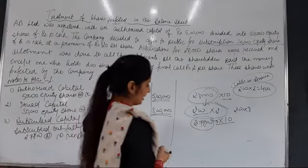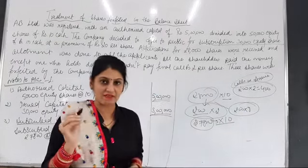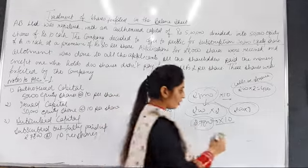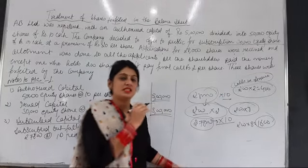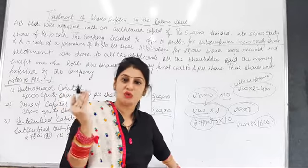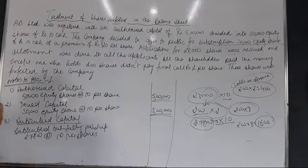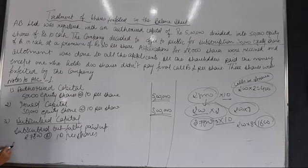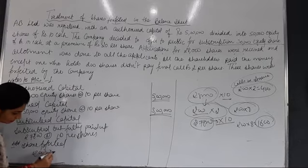Since the company has forfeited those 200 shares, ab in 200 shares mein se jo amount already pay ho chuki thi woh 200 into 8 equals 1,600 thi. Company ne shares forfeit kar liye — it means no person is outstanding to pay anymore. So share forfeited amount: 200 shares into 8 per share equals 1,600. We can show this under share capital in the balance sheet as 'Add: Share Forfeited Account' — 200 shares at rupees 8 per share, i.e., rupees 1,600.